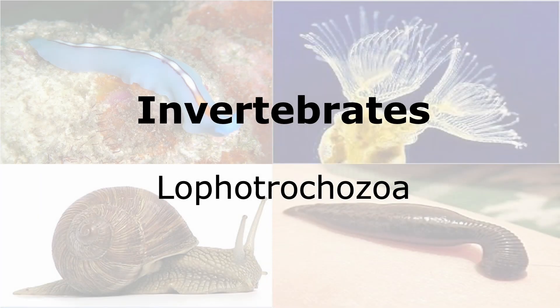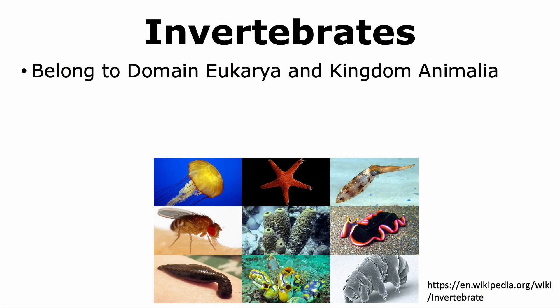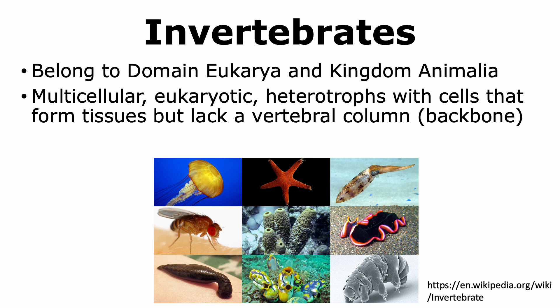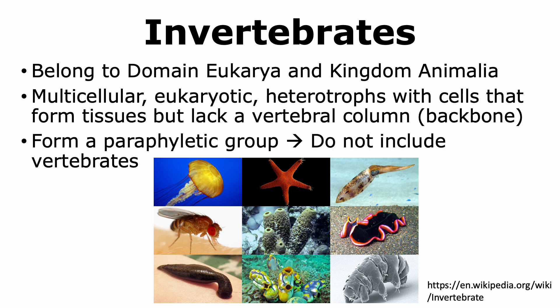In this talk, we're going to learn about the clade Lophotrochozoa, which includes different types of invertebrates. Invertebrates are organisms that belong to the domain Eukarya and the kingdom Animalia. All invertebrates are multicellular eukaryotic heterotrophs that have tissues but lack a vertebral column or backbone. The group of invertebrates forms a paraphyletic group because it does not include vertebrates, even though vertebrates evolved from the same ancestor. Hence, there is no clade called Invertebrata, since it is a paraphyletic group.